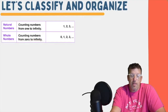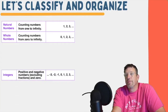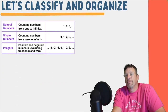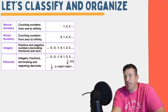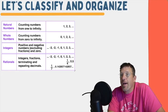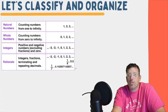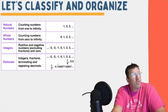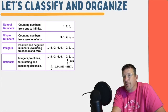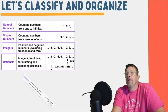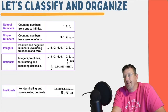Then next we have integers — integers are all the whole numbers plus their opposites. Then we have rational numbers, which are all those things we already mentioned: all the integers, all the whole numbers, all the natural numbers, as well as fractions that don't have decimals in them, and then decimals that have a pattern. Like 0.142857142857142857 — it's a repeating pattern. Either it terminates like 0.5 or it goes on forever but has a pattern — that makes it rational.